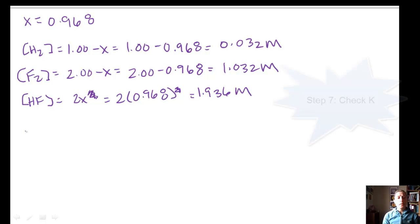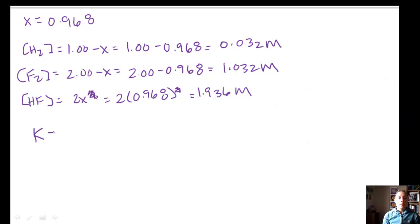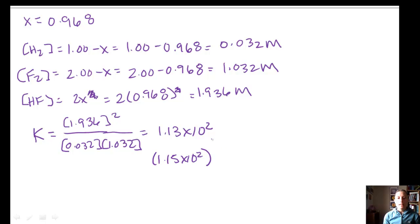So a good thing to do is check your equilibrium constant expression. Make sure that these values are giving us a good K value. So we know that it's concentration of HF squared over equilibrium concentrations of our reactants. And if we calculate that, we get a value of 1.13 times 10 to the second. Our given value was 1.15 times 10 to the second. These are close enough. So we would say that our answers are good.